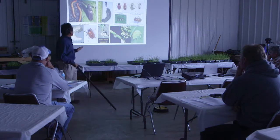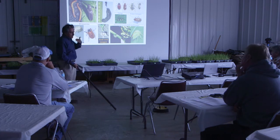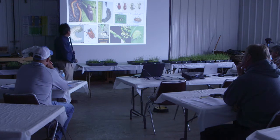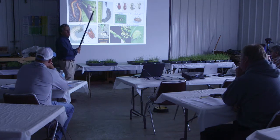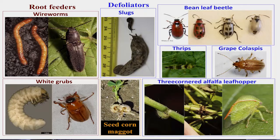Seed treatments in general across different plant systems — not just wheat — are used especially to control wire worms. And even for insects like bean leaf beetles, thrips, and so on. This is for soybeans. That's why seed treatments are used, and for wheat we use them for controlling aphids most of the time.